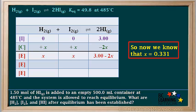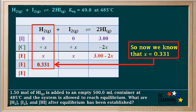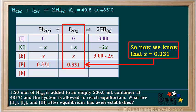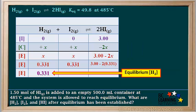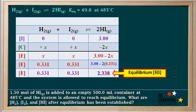Now that X equals 0.331, we substitute back into the ICE table. The equilibrium concentration of H2 equals X, which is 0.331 molar. The equilibrium concentration of I2 is also X, which is 0.331 molar. For HI, substituting 0.331 into 3 minus 2X gives 3.00 minus 2 times 0.331, which equals 2.338 molar — rounded to two decimal places, this is 2.34 molar.